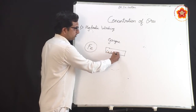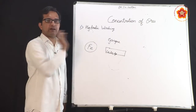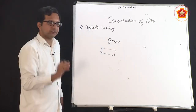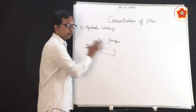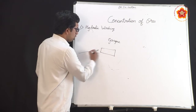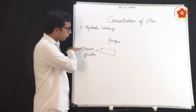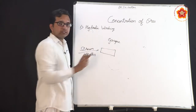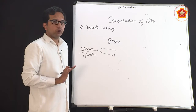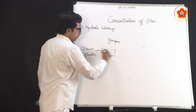For example, if we want to extract iron, all other elements present — copper, zinc, silver — are classified as gangue. In hydraulic washing, we pass a strong stream of water over the ore. This is applicable where gangue particles are not heavy, so the force of water carries away the lighter gangue while the metal particles are retained.